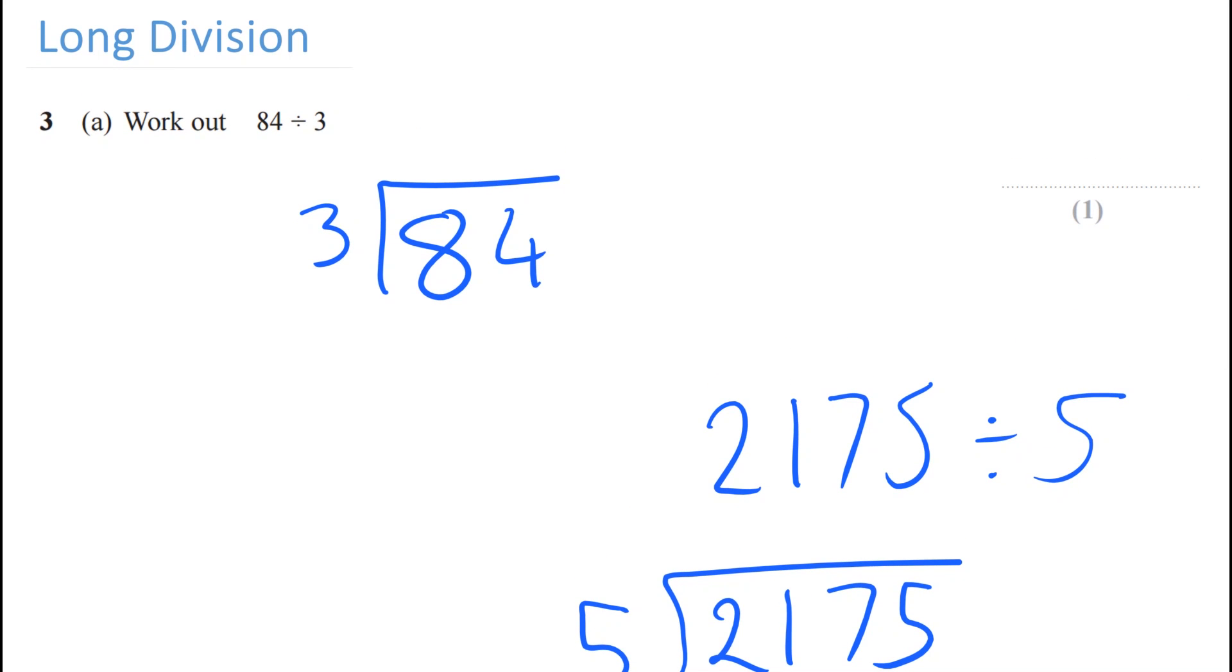Let's do these two examples now and work them out. The first thing you do is you look to see if the first number, the one outside here, can go into the first number here. So can 3 go into 8? Yes it can. It can go in twice with 2 remainder.